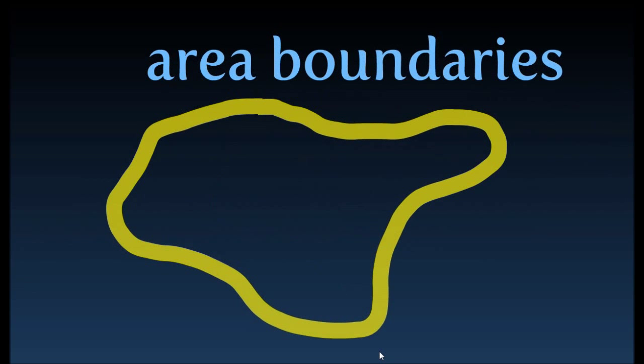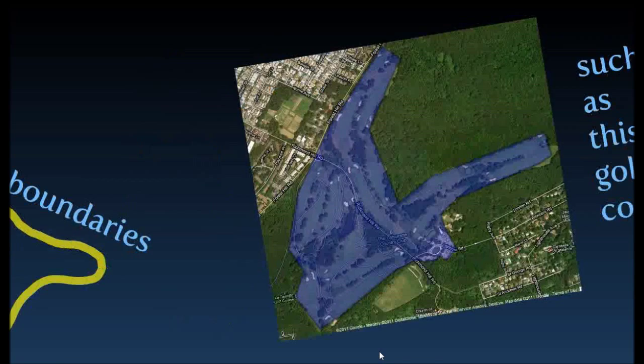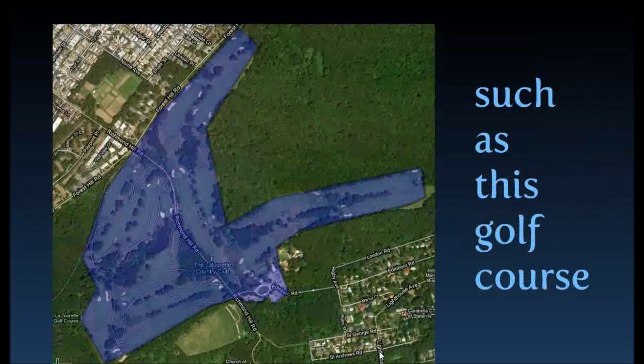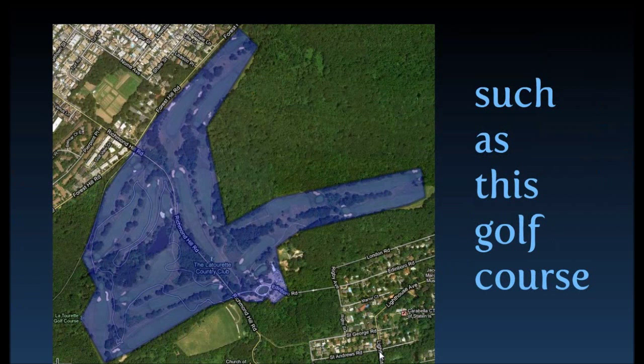For instance, if you wanted to put a boundary around something — maybe it's a school district or a community area. Today's lesson, I'm going to take a golf course. I'll show you how to put a boundary around something, and then you can embed that into your webpage. Here's an example of what you can do — draw the boundary and then embed it.